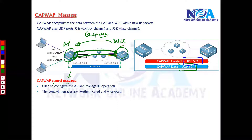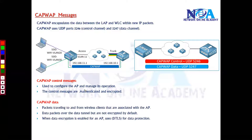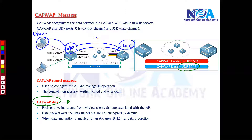The WLC securely controls the access points through the control tunnel. The CAPWAP data tunnel, using UDP port 5247, carries the actual data packets coming from wireless clients. The wireless client sends data to the access point, which encapsulates and forwards it to the WLC. By default, this data traveling from clients through the access point to the WLC is not encrypted.